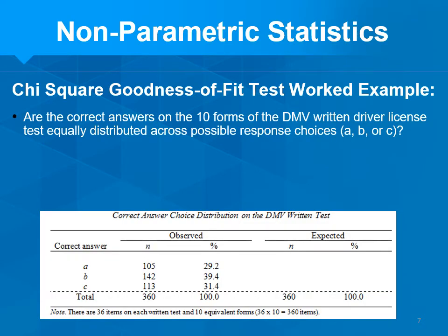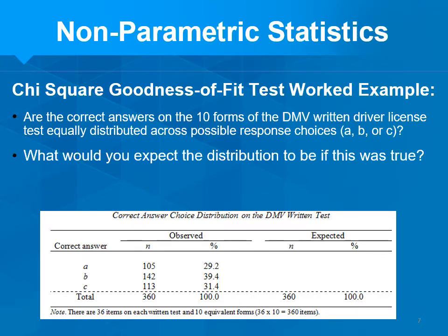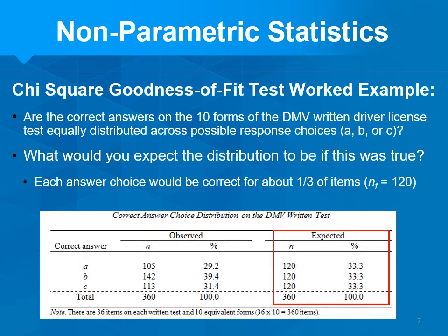Let's do one. Are the correct answers on the 10 forms of the DMV written driver's license test equally distributed across possible answer choices A, B, and C? Basically, is there really any logic to guessing B — which is what people always say — or are all choices equally likely to be correct? Given 360 total questions, if the null hypothesis is true, you'd expect one-third of items to have A, B, and C as the correct answer — that's 120, 120, 120, or 33% each.